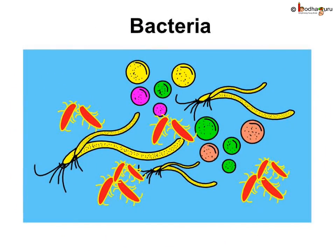What are bacteria? Bacteria are single-celled tiny organisms present around us. They cannot make their own food, and depend either on other living or dead decaying matter. There are two types of bacteria: parasitic bacteria, which depend on living things for their food, and saprophytic bacteria, which depend on decaying matter for their food.